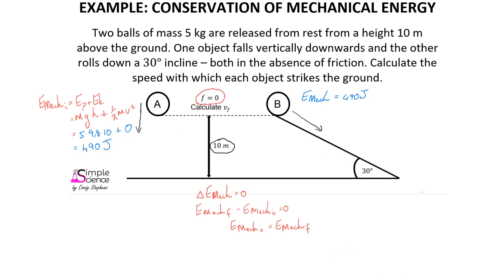For object A, because mechanical energy does not change, our initial mechanical energy must equal the final mechanical energy when this object strikes the ground. Therefore, 490 joules equals mass times gravity times height plus one half mass times velocity squared. At the ground, height is zero so potential energy is zero, mass is still 5 kg, and we solve to find that the velocity of object A is 14 meters per second just before it strikes the ground.